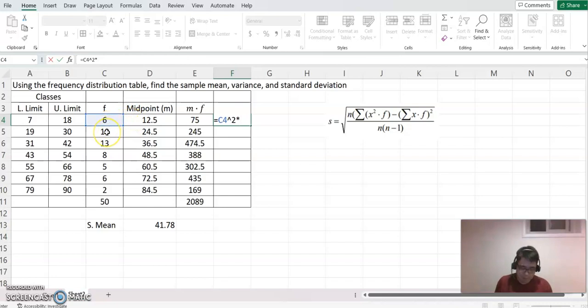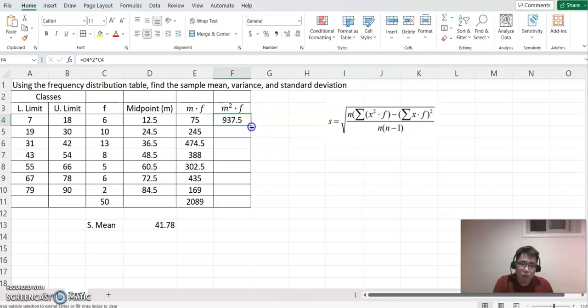Sorry, I made a mistake. So equal to midpoint, then shift to number six key, and then square, times frequency, enter. Now go back to the right bottom, hold it, copy down. Don't forget you're finding the total sum of this column as well.